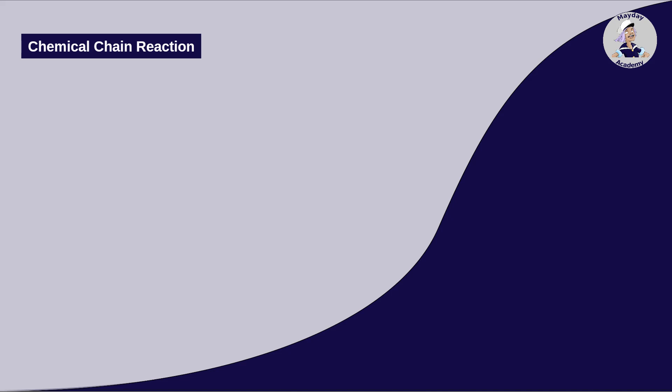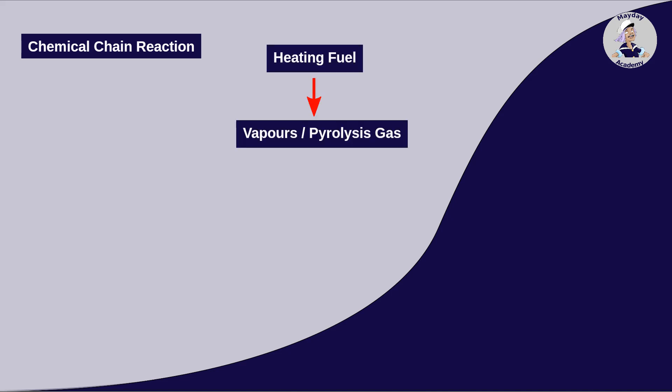A chain reaction is a series of reactions that occur in succession, with the results of each individual reaction adding to the others. When heating a fuel, vapors can form that contain substances that combine with oxygen and burn.